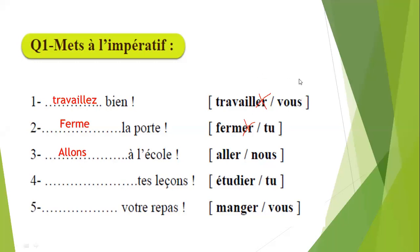Now let's see — Noor Allah, bonjour Noor, comment ça va? Ça va bien, merci. Can you answer the next one? Étudier tes leçons with tu. I will conjugate it in imperative. First thing, cross the ER. Excellent. Then what I will put? Only one letter with tu — E. Très bien, I put letter E. So it will be étudie tes leçons — study your lessons. Très bien, excellent.